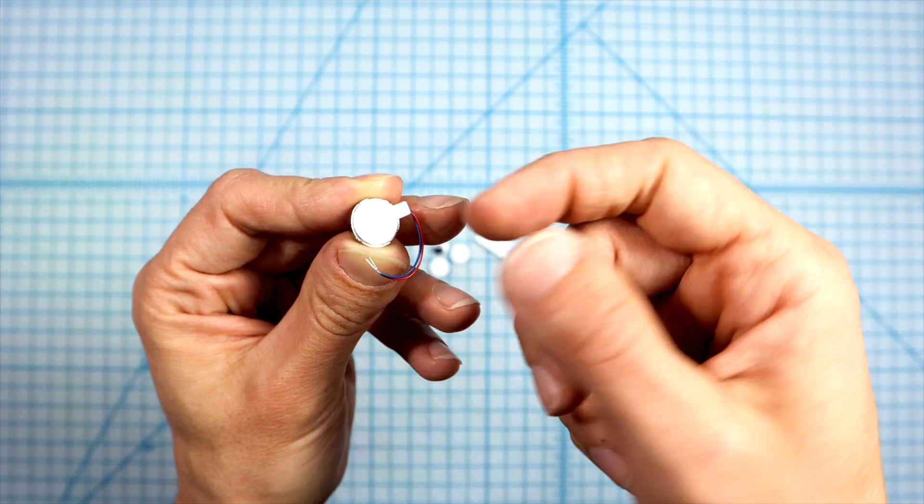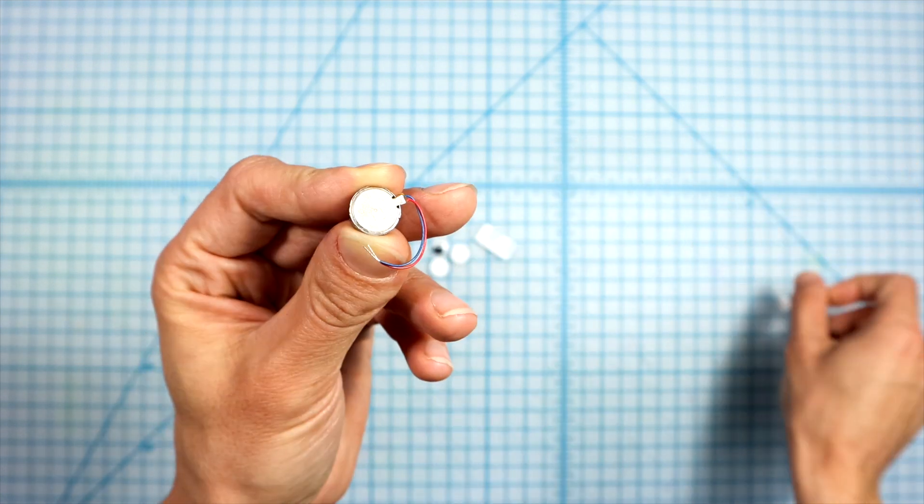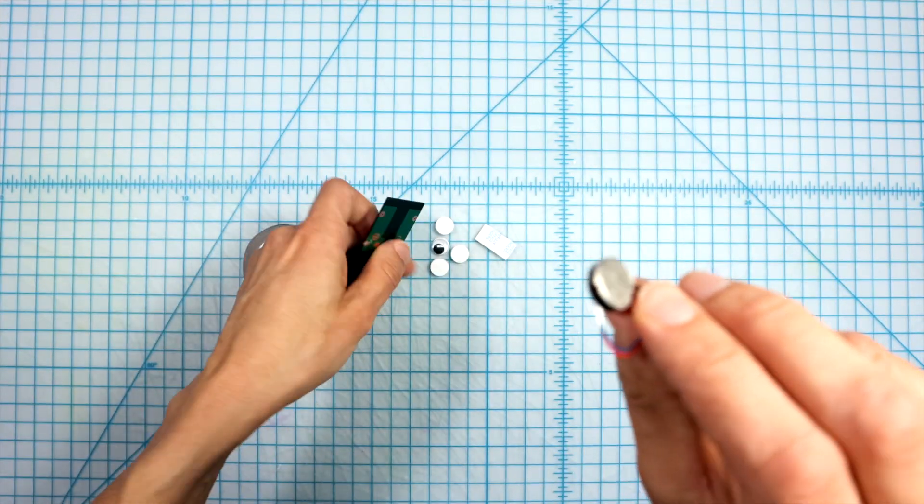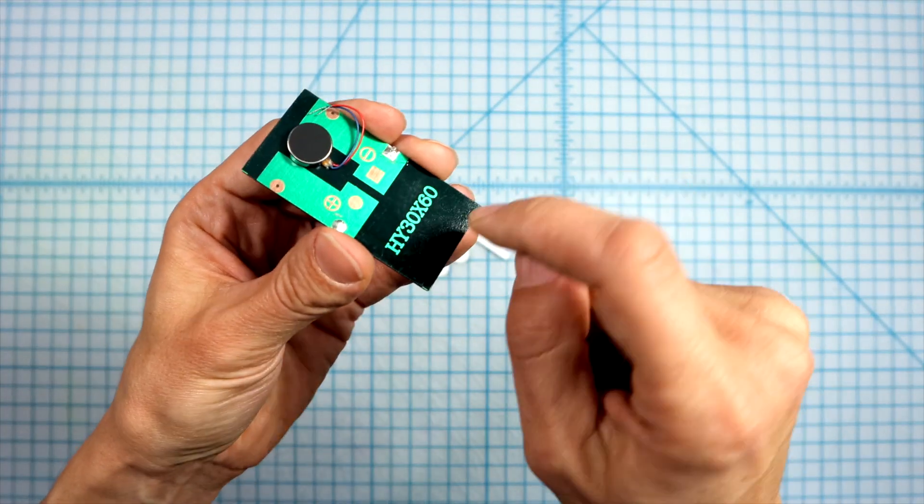First, peel the backing from the self-stick motor and stick it to the back of the solar cell, right here at the top, across from the model number.